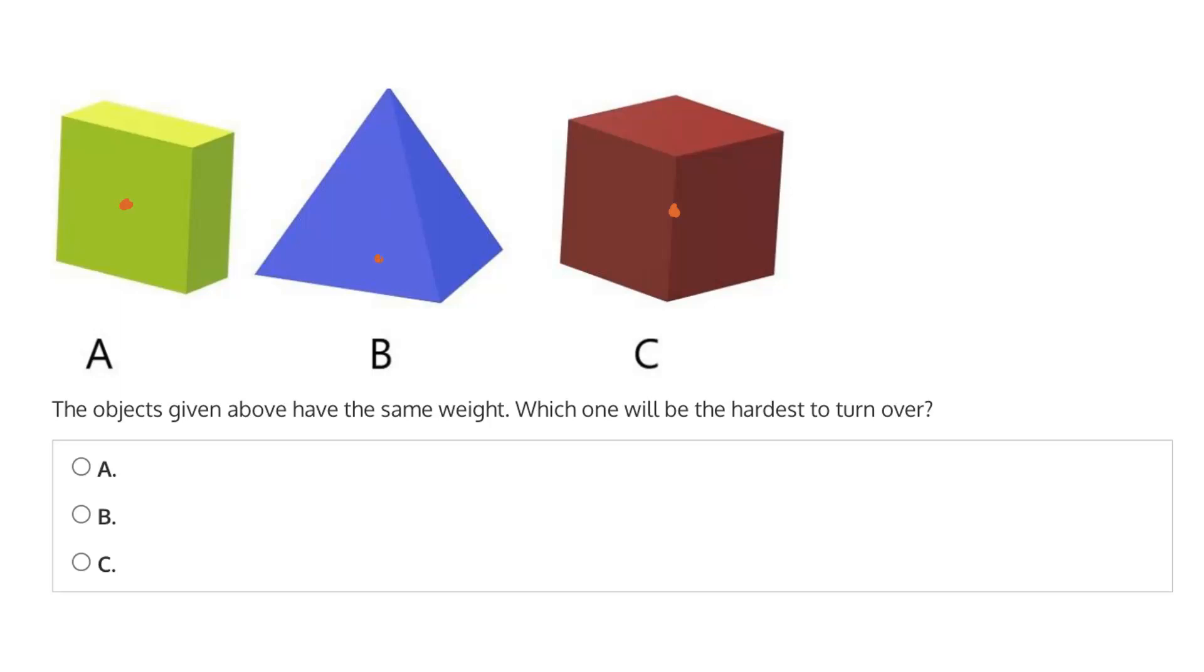Instead, the center of mass for B will be much lower, much closer to the base. And this is because as we move down the pyramid and closer to the base, more and more of the weight will be occupied by this lower portion than the higher portion. So we have a much lower center of mass in B that makes it much harder to turn over. And therefore the correct answer is B.